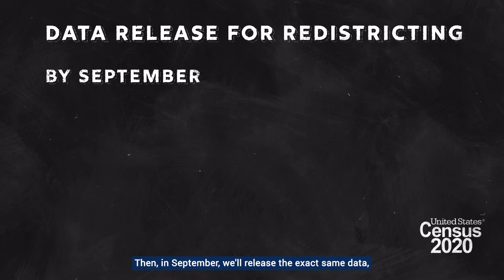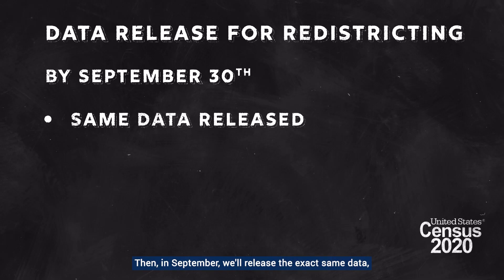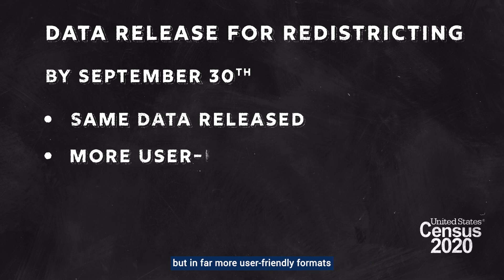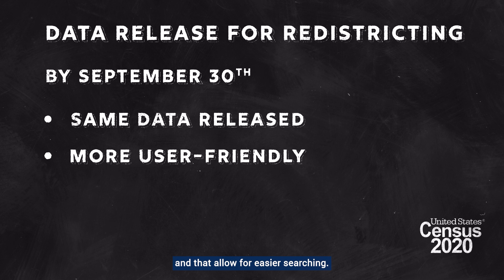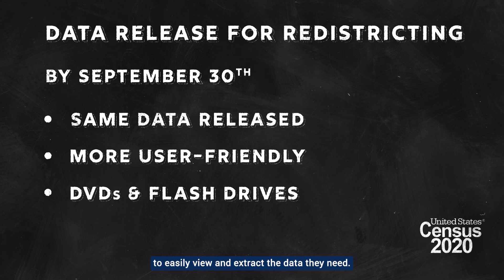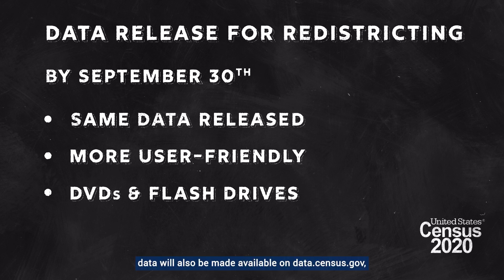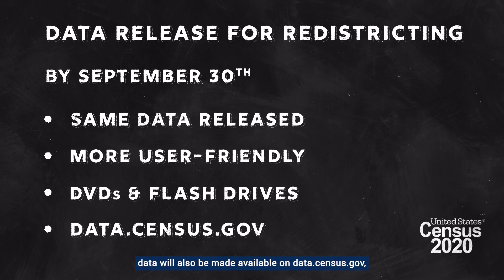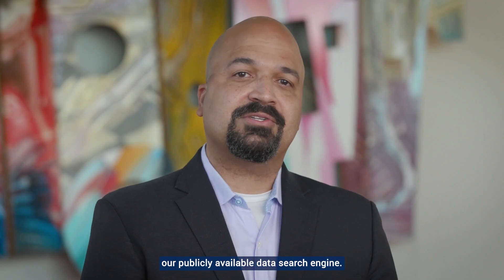Then in September, we'll release the exact same data, but in far more user-friendly formats that people are familiar with and that allow for easier searching. We'll officially send the redistricting data via DVDs and flash drives to state officials, with toolkits and software that help them to easily view and extract the data they need. At the same time, data will also be made available on data.census.gov, our publicly available data search engine.